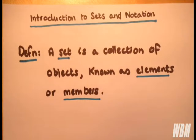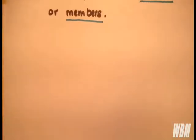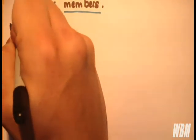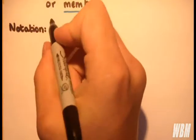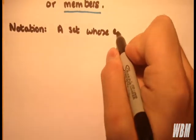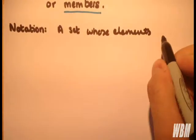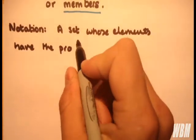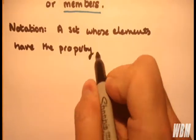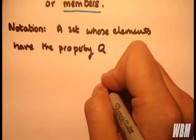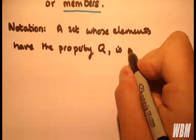So when it comes to notation, how can we display or write down a set? A set whose elements have the property Q - now this is just a general form, so a property can be anything.